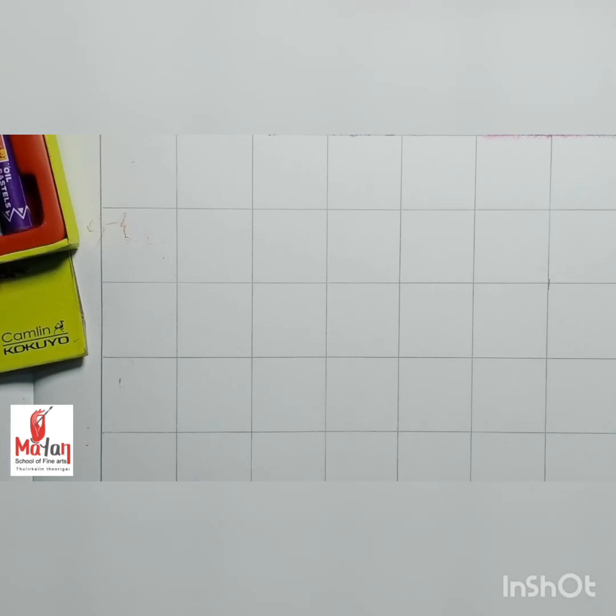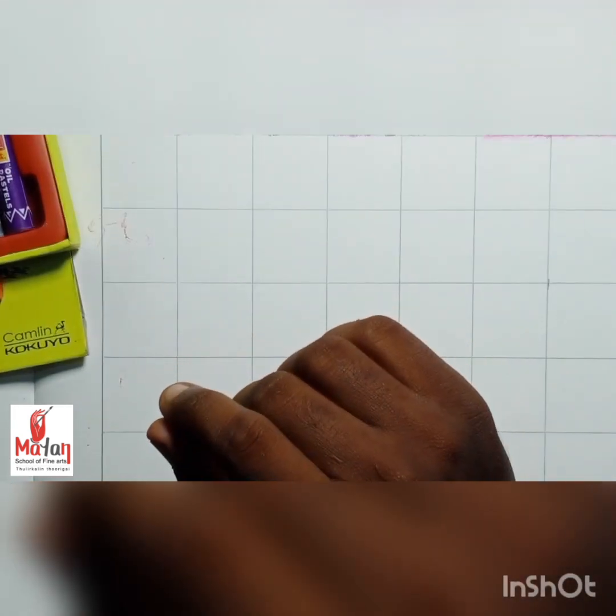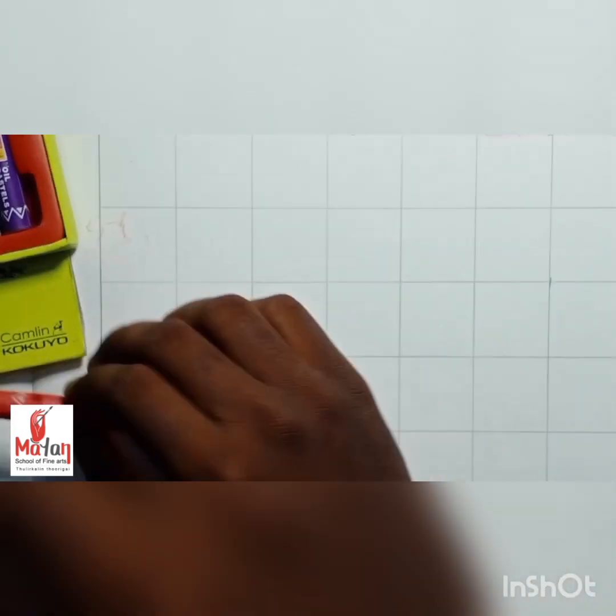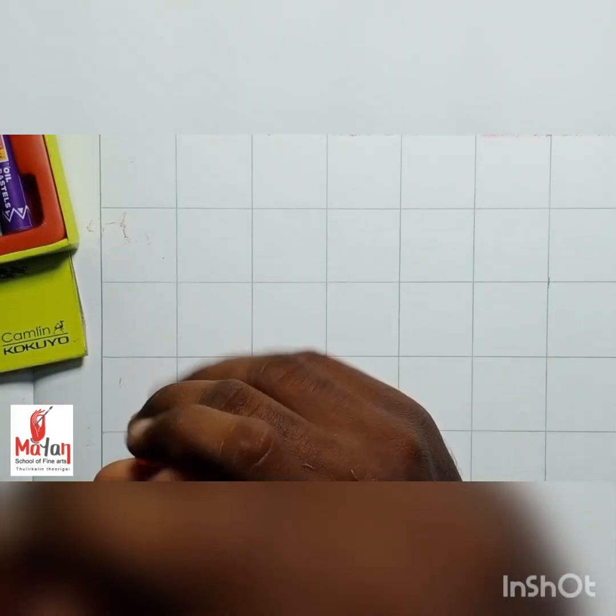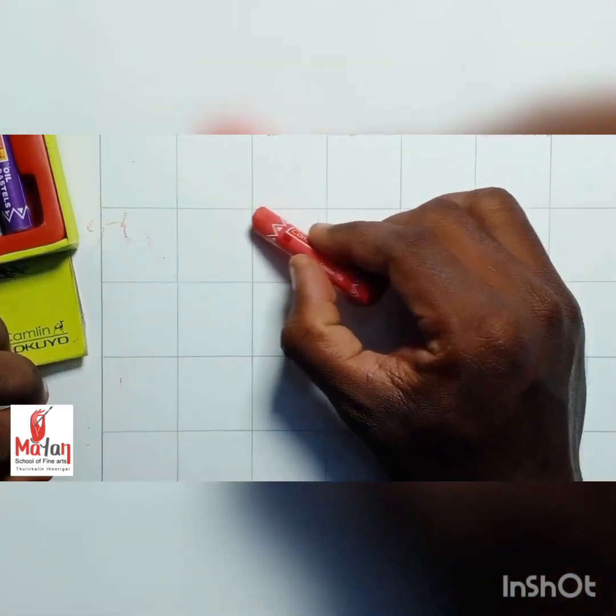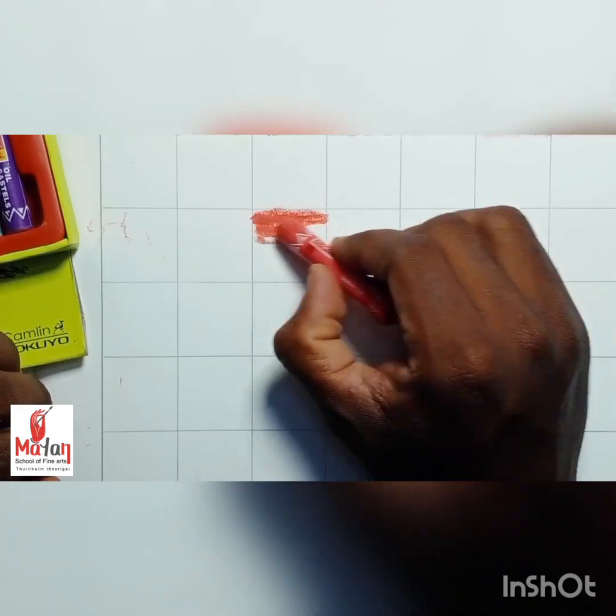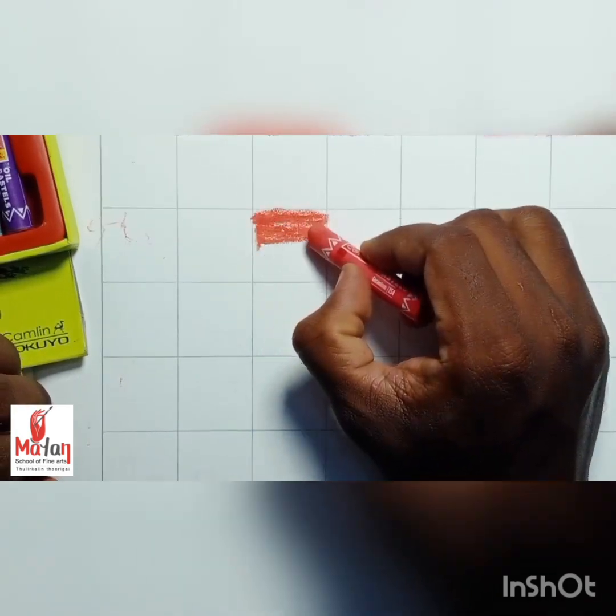Hello everyone, welcome to Mind School of Fine Arts. We are here to learn about wet blending and dry blending. I take a huge amount of cotton, then I take the red color. I apply it on the first half of the cell. I slowly apply the color.